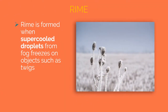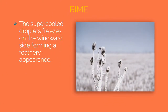Rime is formed when supercooled droplets from fog freezes on objects such as twigs. The supercooled droplets freeze on the windward side, forming a feathery appearance.